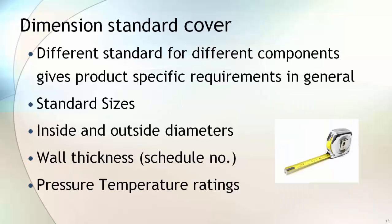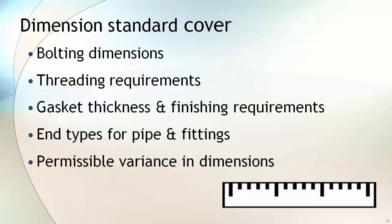Different dimensional standards are used for different components, and each standard gives product-specific requirements. In general, a dimensional standard provides size, inside and outside diameter, wall thickness, and pressure-temperature rating. For flanges, it also provides bolt hole diameter, bolting requirements, threading requirements, gasket thickness, and finishing requirements, as well as different types of pipe and pipe fitting ends. Dimensional standards also list various permissible variations that are acceptable within the dimensional requirements.